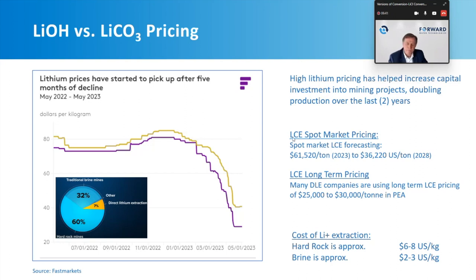Looking at lithium carbonate equivalent spot market pricing, more conservative or realistic estimates used in daily company PFS or PEA assessments put it around $25,000 to $30,000 per metric ton. As for why brine: if we have to make 2 to 3 million metric tons and we're starting with 100,000, the speed of bringing a plant online is critical. Hard rock mining requires environmental permits and construction — could be 8 to 10 years before a new plant comes online, at around $6–8 US per kilogram.